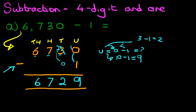And that is our answer. 6,730 minus 1 is 6,729. That is correct. Let's give it a nice big tick.